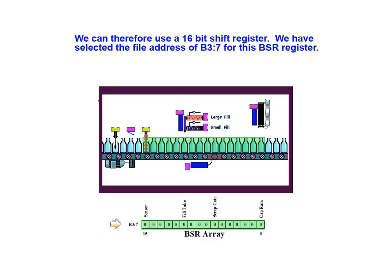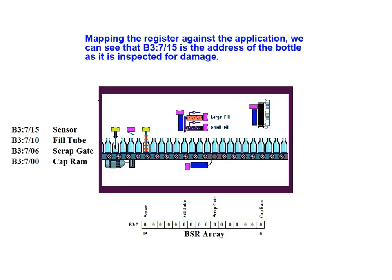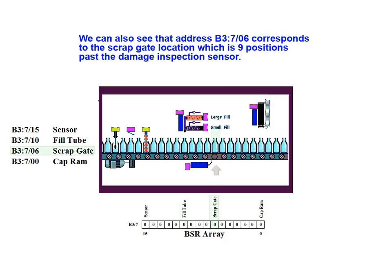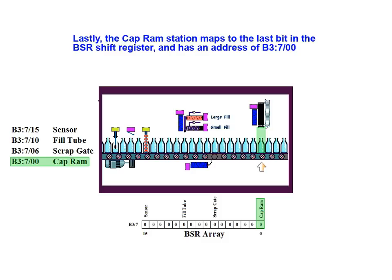We have selected the file address of B37 for this BSR register. Mapping the register against the application, we can see that B37-bit 15 is the address of the bottle as it is inspected for damage. The fill station location corresponds to address B37-bit 10. Address B37-bit 6 corresponds to the scrap gate location. Lastly, the cap ram station maps to the last bit in the BSR shift register with an address of B37-bit 0.